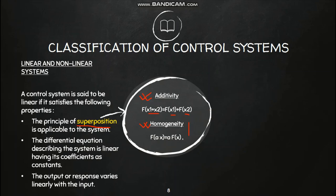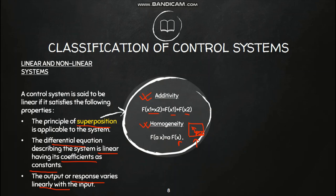Homogeneity is shown by the equation: the output of a scaled input a·x equals a times the output of x, i.e., f(a·x) = a·f(x). For example, if you take the air density at a small portion of a room as f(x) and multiply by a, it gives the scaled density a·f(x), which equals f(a·x). Second, a system is linear if the differential equation describing it is linear and its coefficients are constants. Third, the most obvious: the output or response varies linearly with the input.